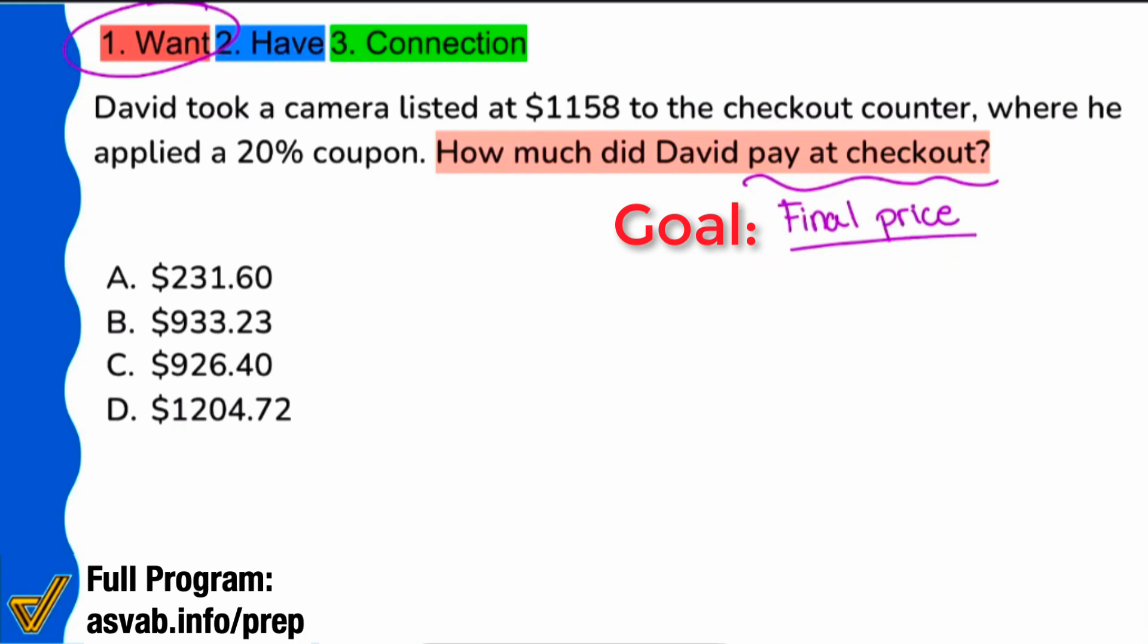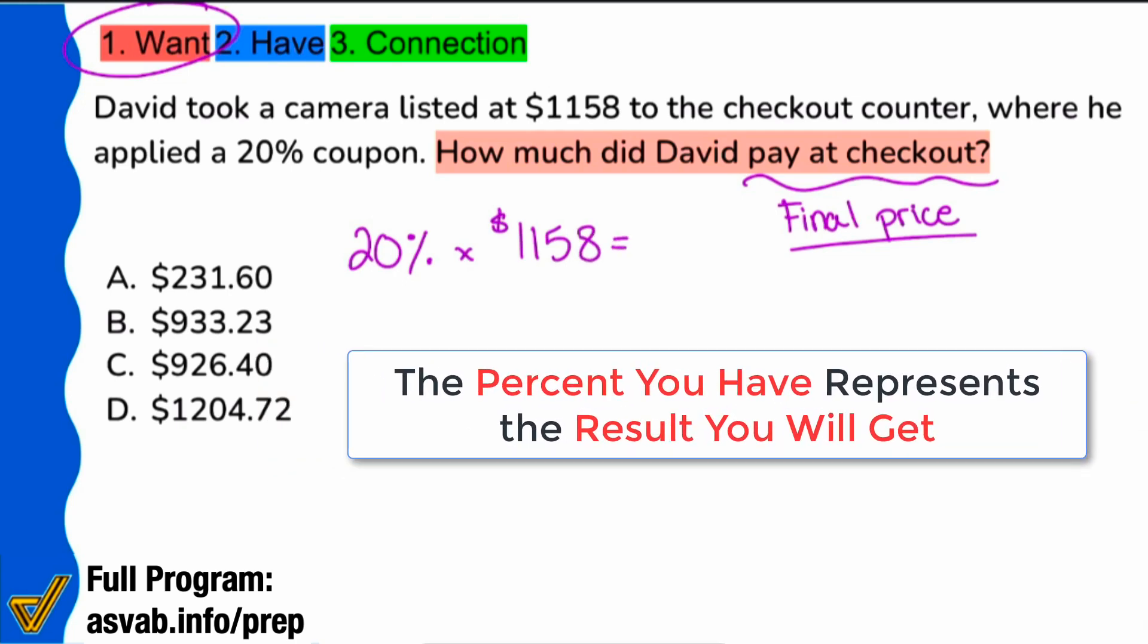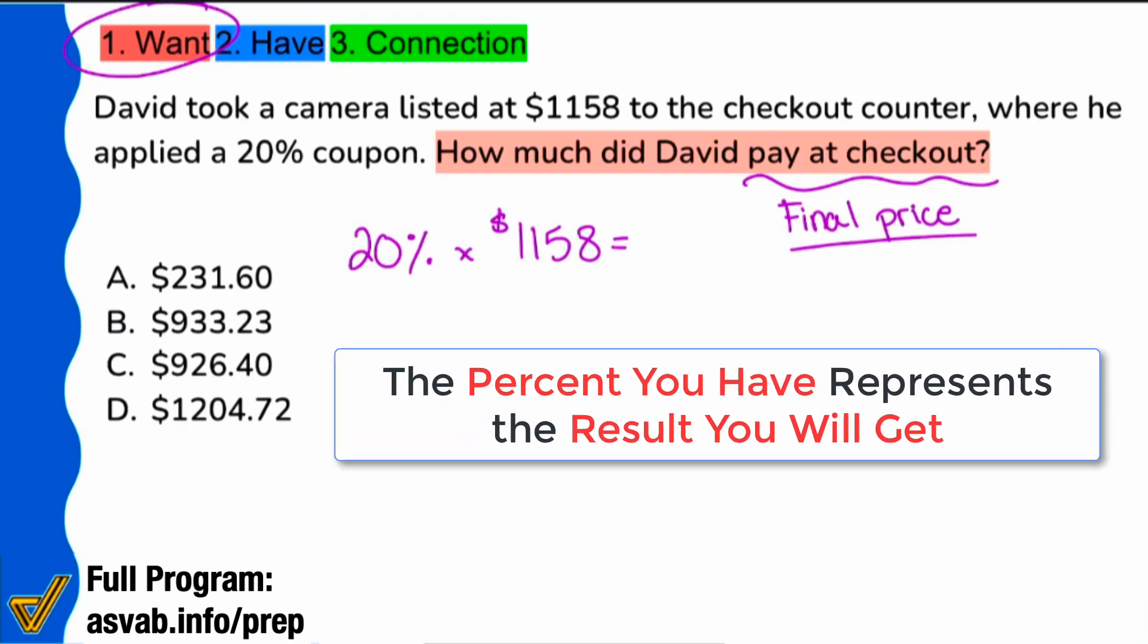So that's what I really want to emphasize to you in this video, my Math Party people. It's very important to understand what the question is asking you to find. That way, when you try to get to the solution right over here, if you do 20% times 1158, if you perform this, you need to understand that the way the formula works is the percent that you have right over here, the percent that you have represents the result that you're going to get.